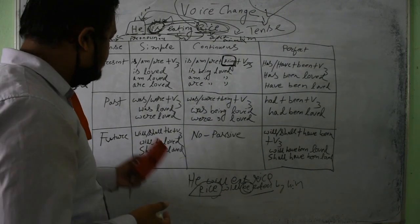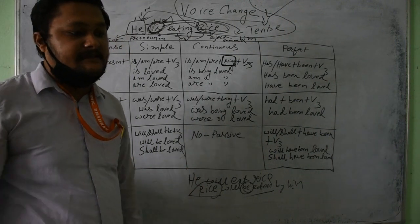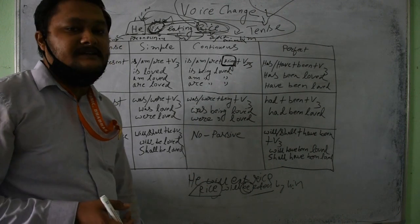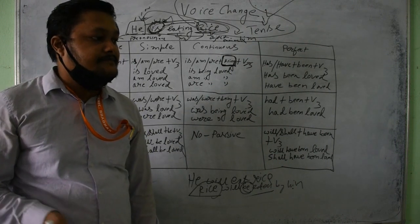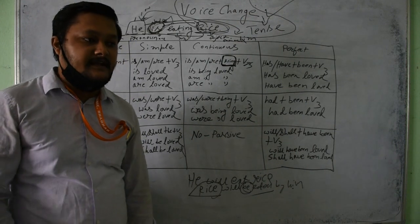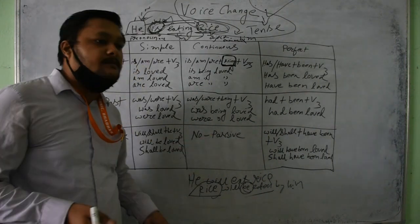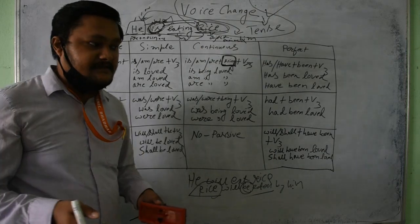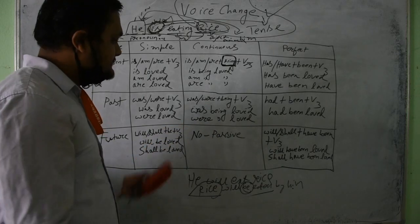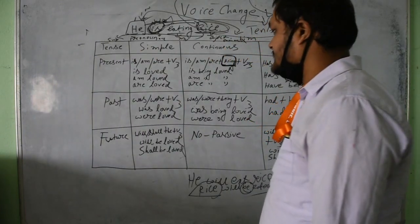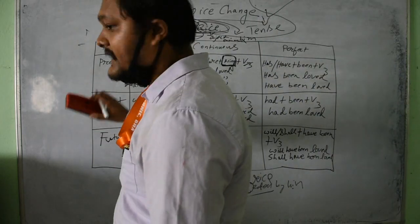Active voice is always spoken directly. In passive voice, the subject who was doing the work now has the work done by them — the roles are reversed. The subject who was doing the action becomes the object. This is called passive voice. The same rules apply for past, present, and future tenses. We will now take some questions to see how it actually works.